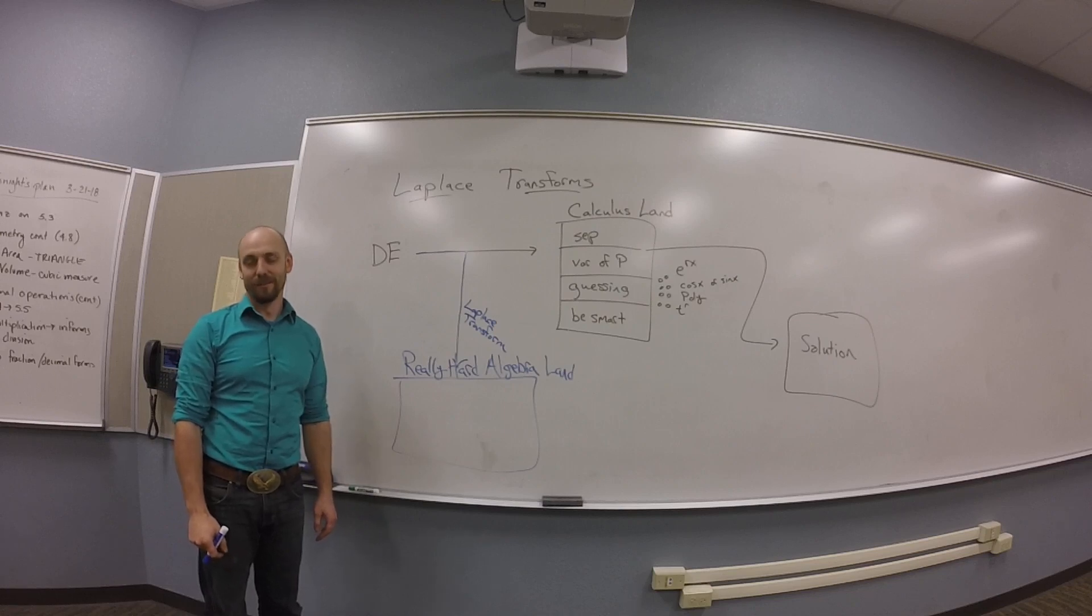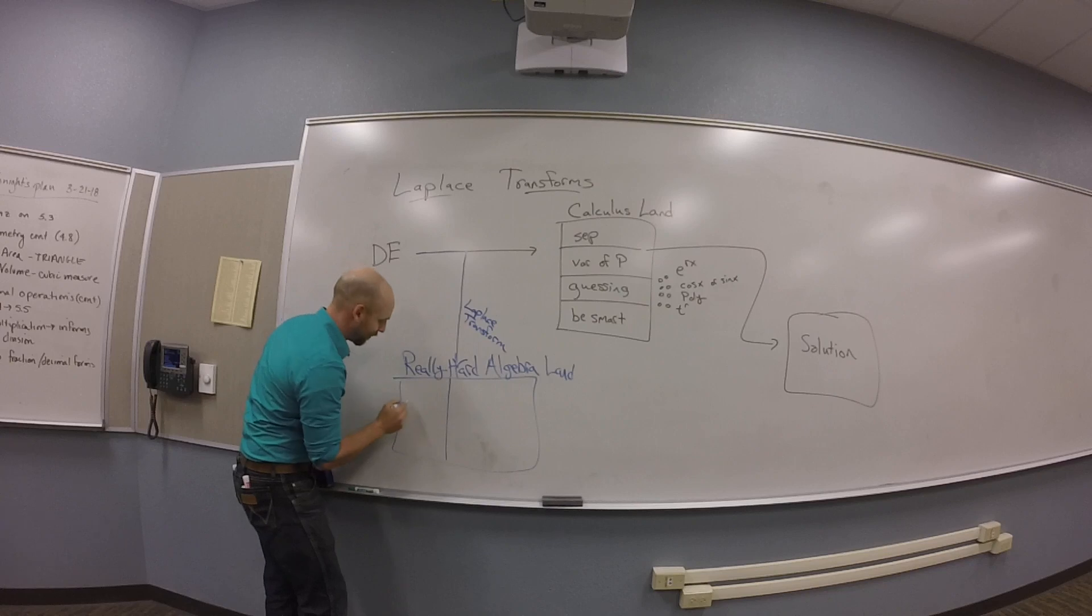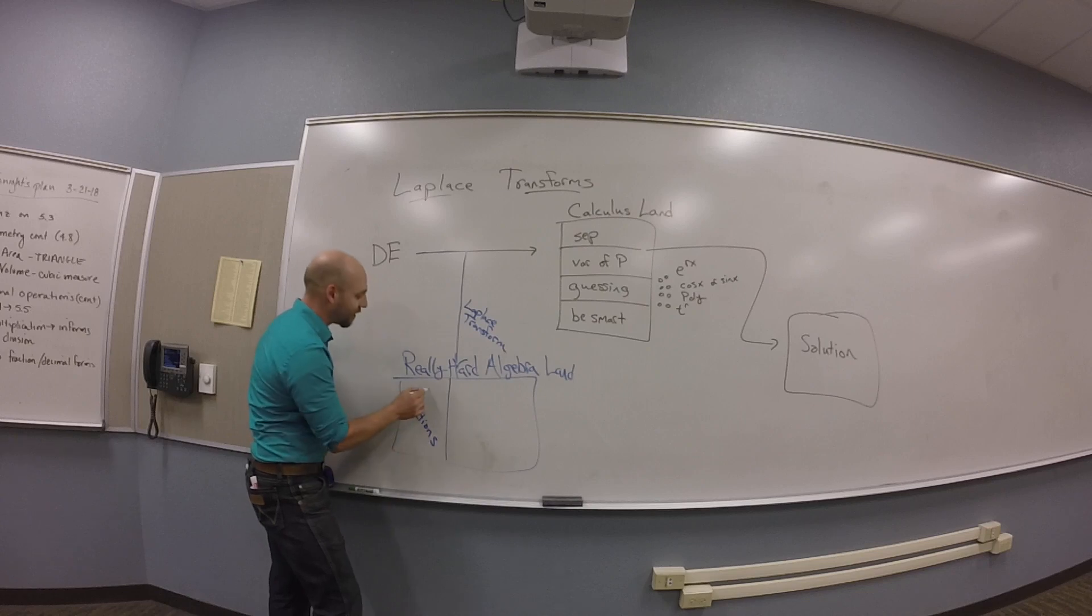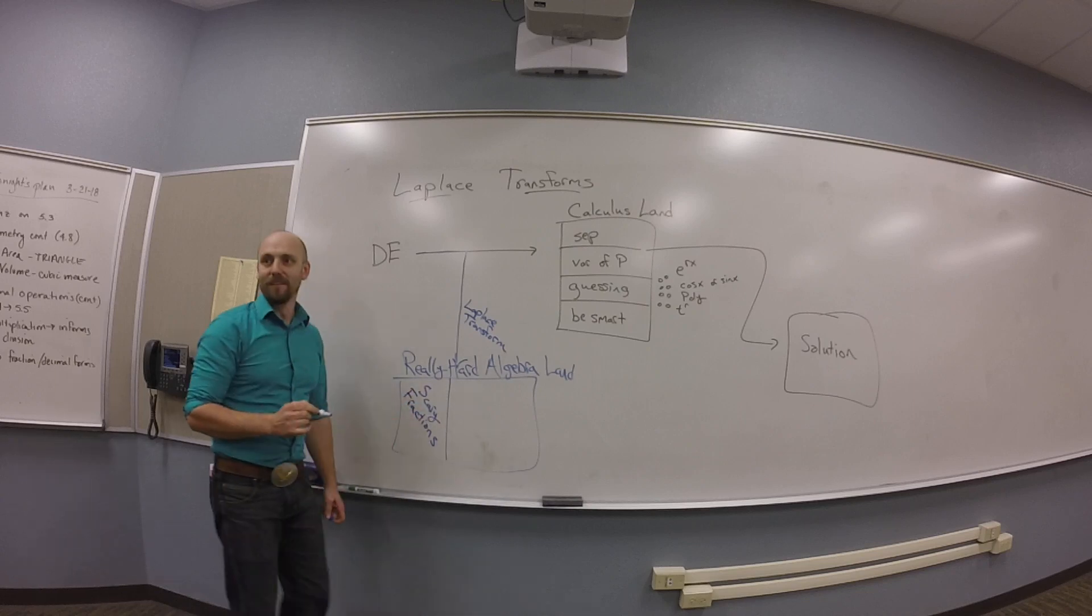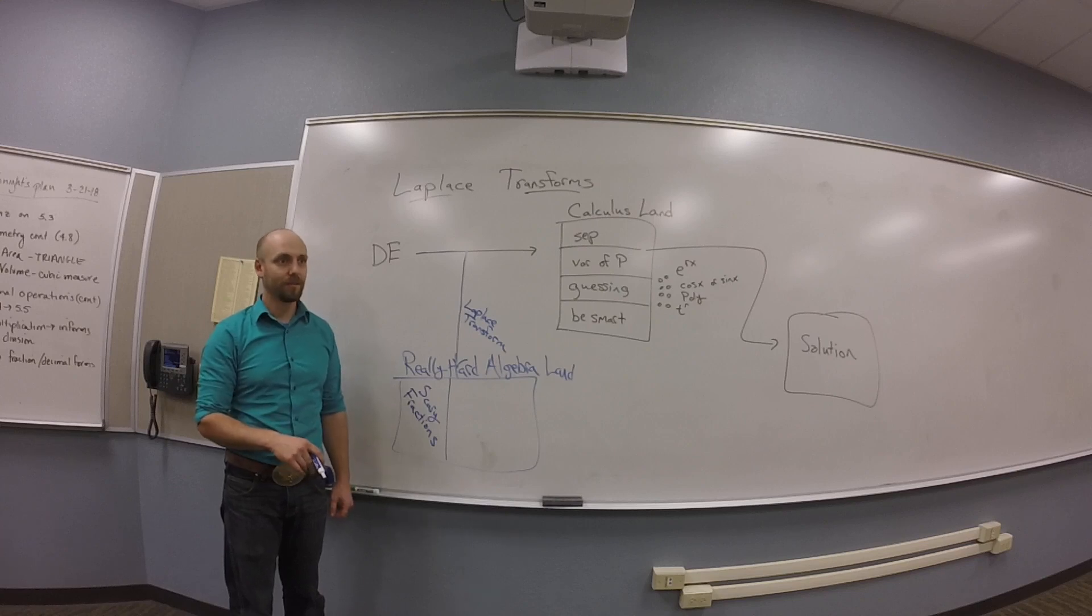Yeah. Okay. So my claim is there are two tricks in really hard algebra land. The two tricks in really hard algebra land are things you've forgotten about manipulating fractions. Oh boy. And I'll concede that they're scary fractions. Right. They're fractions made out of rational functions. Or, sorry, they're rational functions, right? So they're fractions made out of polynomials. Scary fractions.